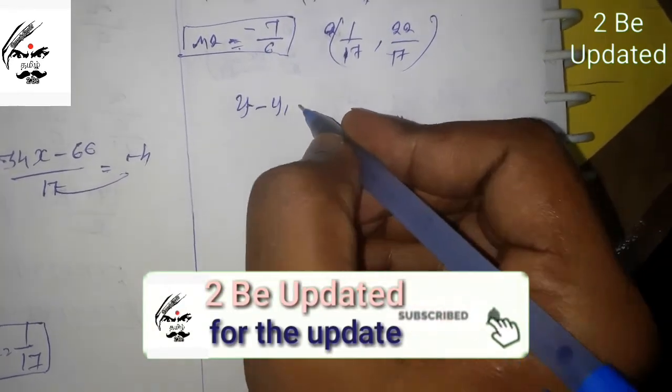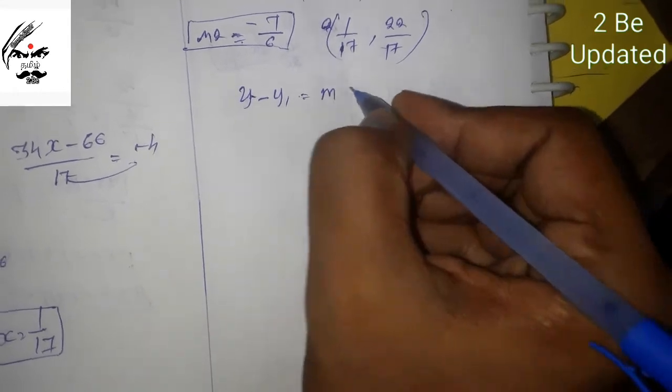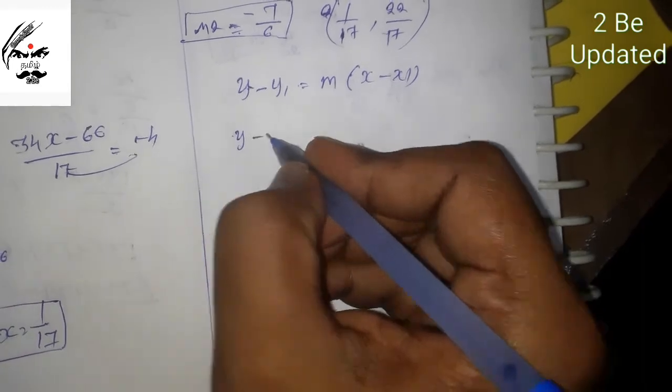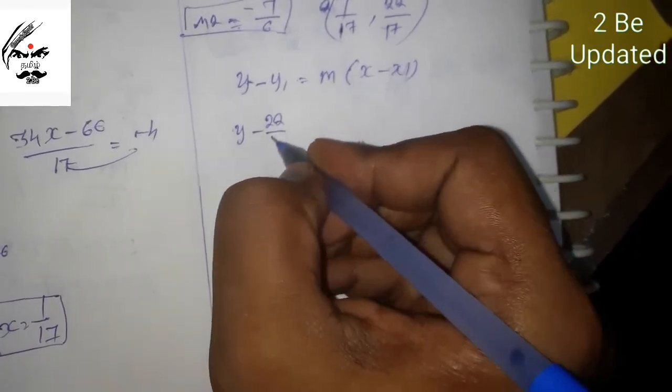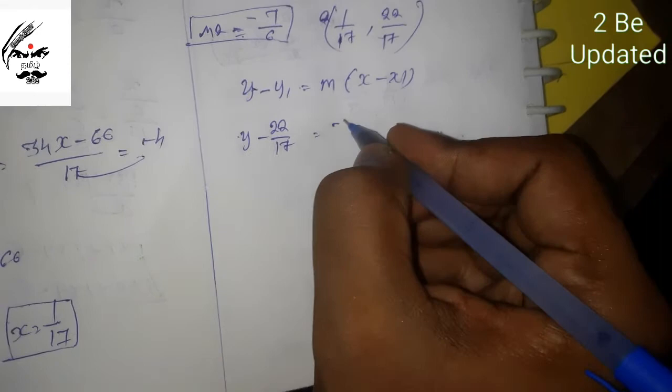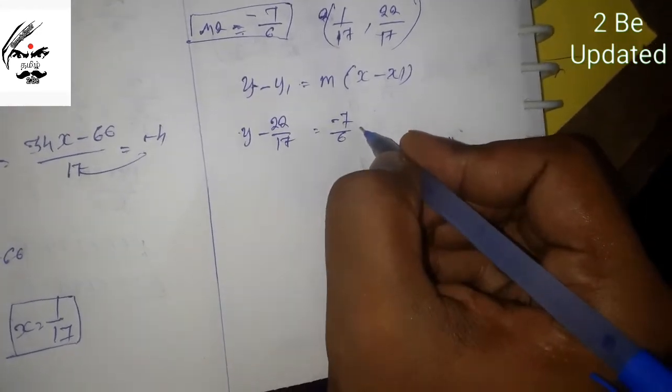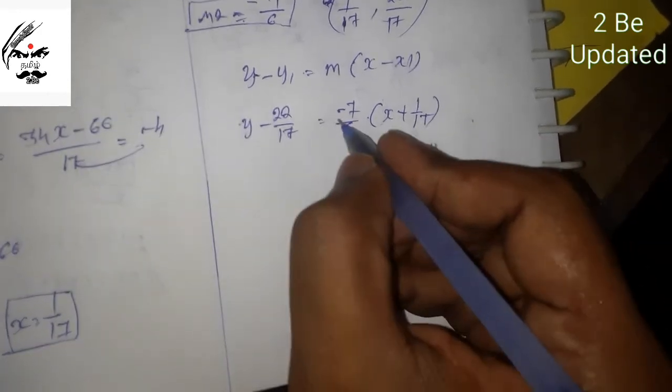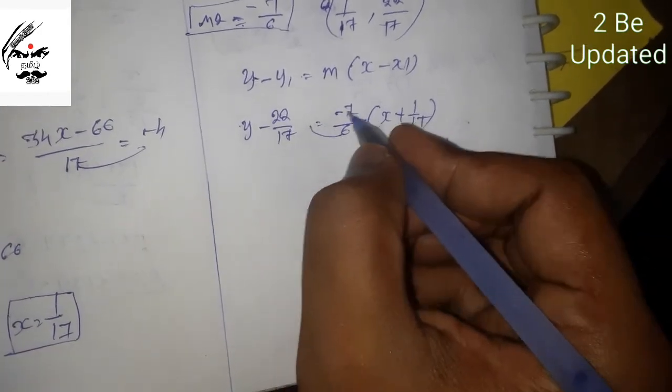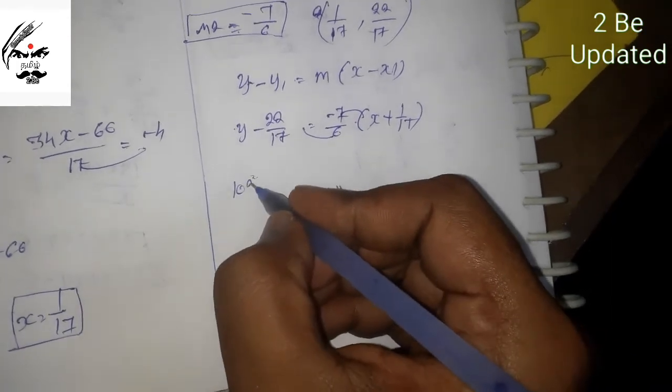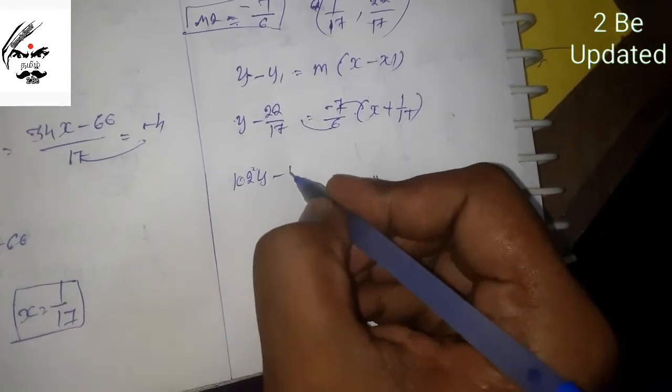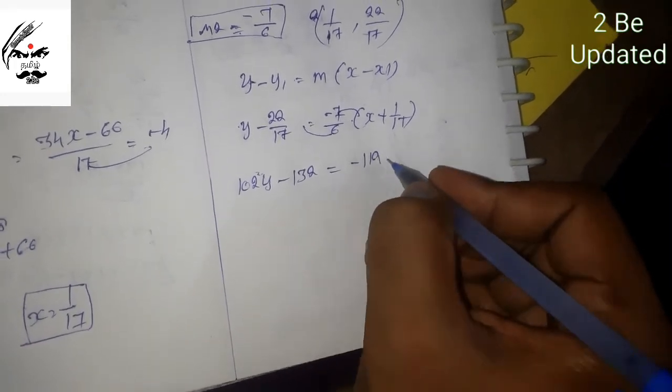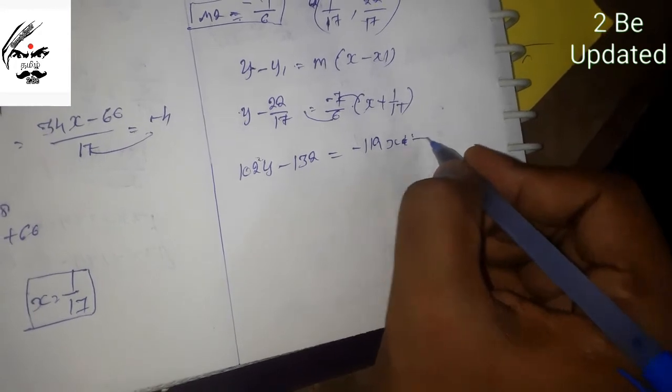Using the point-slope form: y minus y1 is equal to m times (x minus x1). So y minus 22 by 17 is equal to minus 7 by 6 times (x minus 1 by 17). Multiplying through by 102: 102y minus 132 is equal to minus 119x plus 7.